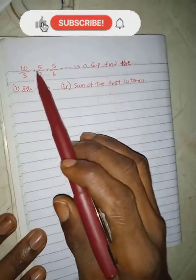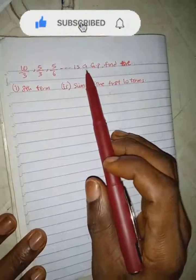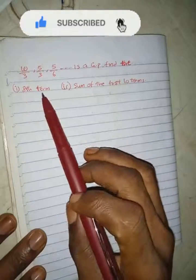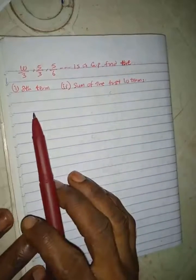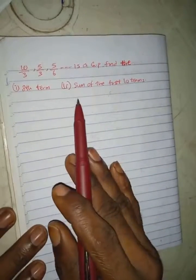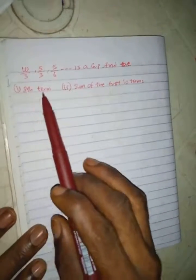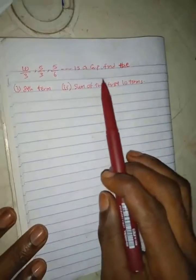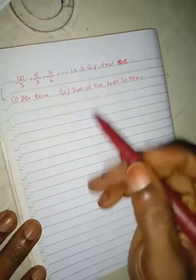The question says that 3/10, 5/3, 5/6, dot dot dot is a GP. We need to find the 8th term and the sum of the first ten terms. In the last video I gave you the formula to find the nth term of a GP and the formula to find the sum of a GP, so we will be using both formulas to solve this question.